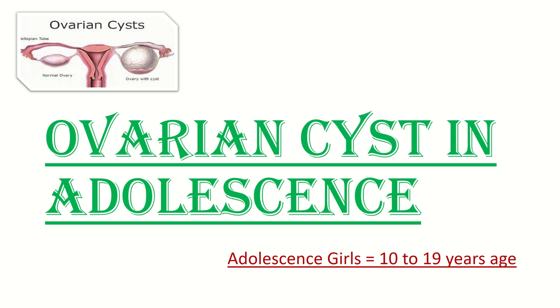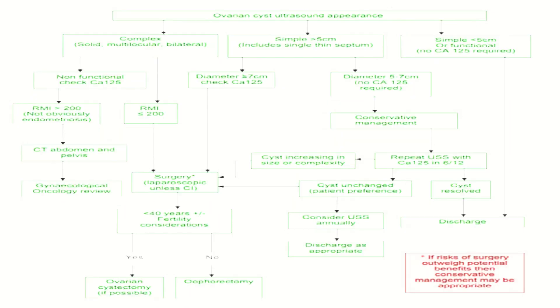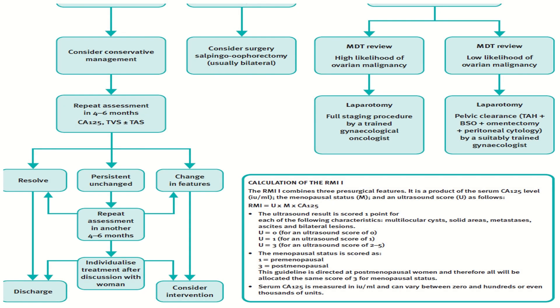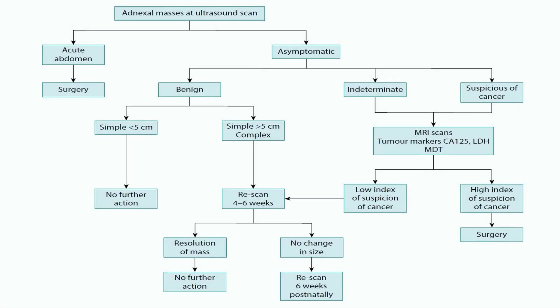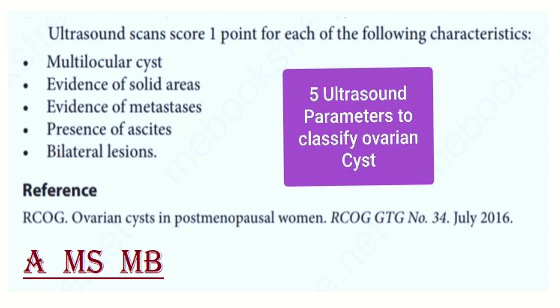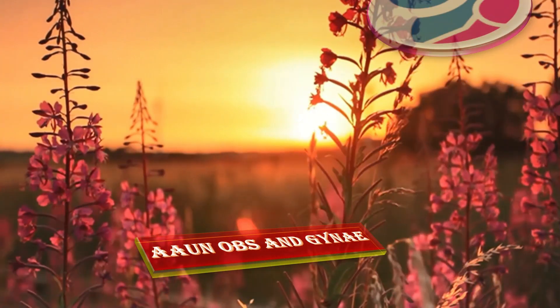Adolescent girls are those in the age group of 10 to 19 years; this algorithm shows the management plan for ovarian cysts in adolescents. For ovarian cysts in premenopausal women, we follow the algorithm from the DOG article. For postmenopausal women, we follow the RCOG guideline. For ovarian cysts in pregnancy, the DOG article algorithm is followed. The RMI calculation uses the formula: U multiplied by M multiplied by CA-125. Five ultrasound parameters are used to classify the ovarian cyst.